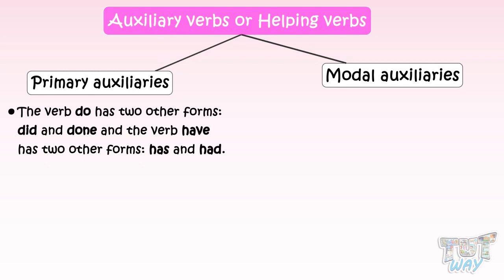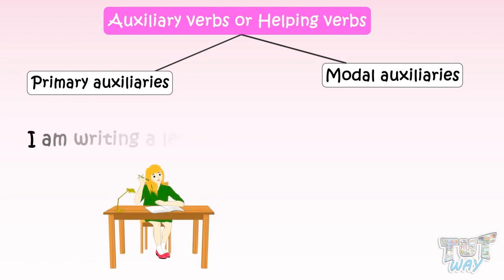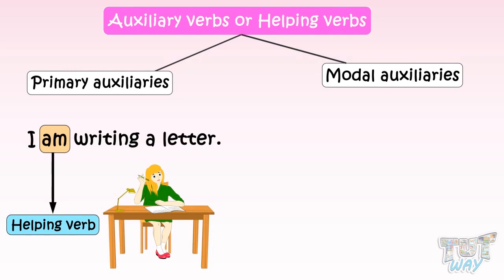As we have learned, helping verbs tell us about the tense and voice of the main verb. For example, 'I am writing a letter.' Here, the verb 'am' is a helping verb and it suggests that the subject is in singular first person and the tense is present tense.